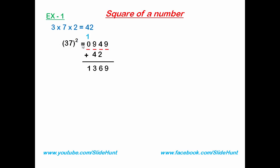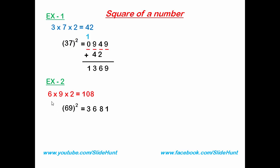Example 2: let's square 69. 6 squared is 36, and 9 squared is 81. Multiply the two digits and double it: 6 times 9 is 54, and 54 times 2 is 108. Adding: write 1, then 8 plus 8 is 16 so write 6 carry 1, then 1 plus 6 is 7, and 3 plus 1 is 4. So the square of 69 is 4761.